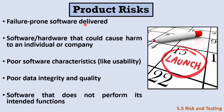Product risks talk about risks in the product itself — its usability, performance, functionality, and so on. Examples include failure-prone software being delivered, or software or hardware that could cause harm to individuals or the company when used. Other product risks include poor software characteristics like low usability, poor data integrity and quality, and software that doesn't perform its intended functions. This relates to the seventh testing principle, which talks about absence of errors.